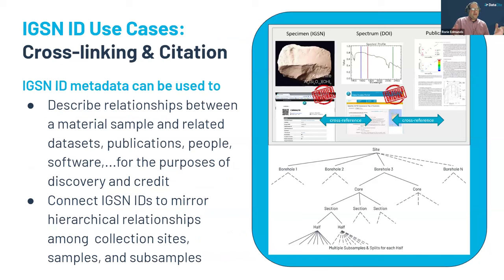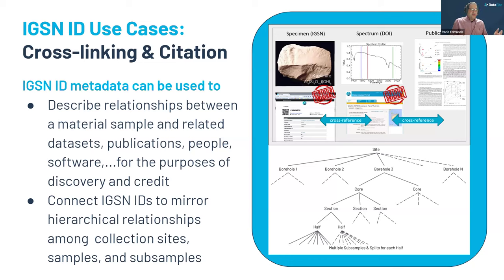The final main use case is cross-linking and citation. IGSN ID metadata can be used to describe relationships between a sample and any related datasets, publications, the people involved in collecting and managing that sample, and any software used in analysis processes — really for the purposes of discovery and credit. Samples also come from a collection site and are very often sub-sampled, so you can connect IGSN IDs to mirror hierarchical relationships.